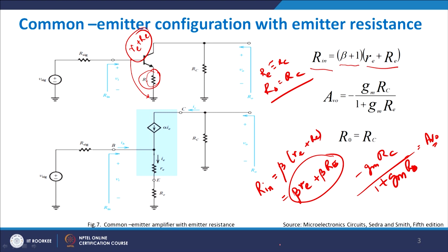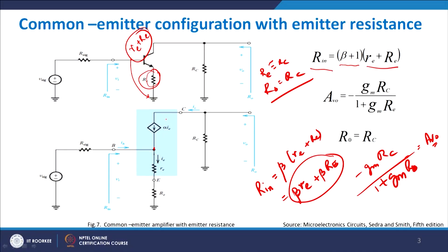Looking at the circuit: we have VSIG and RSIG at the input, with α×IE as the collector current source. Assuming the emitter current is fully determined by the input bias, the collector current equals α×IE. The emitter current IE also flows through RE on the lower side, producing a voltage drop IE×RE across that terminal.